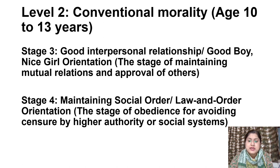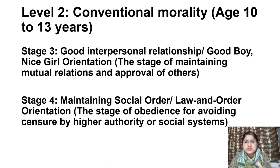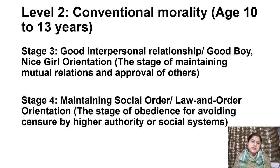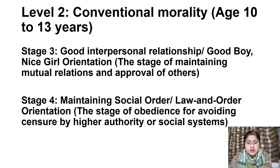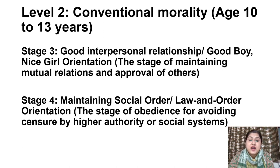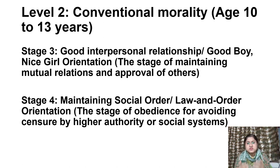Level 2 is also called conventional morality, and according to Kohlberg, this level covers the age group of 10 to 13 years. Under this level we again have two stages: Stage 3, which is the good interpersonal relationship stage — a good boy, nice girl orientation — the stage of maintaining mutual relations and approval of others; and Stage 4, maintaining social order or law and order orientation, the stage of obedience for avoiding censure by higher authority or social systems.